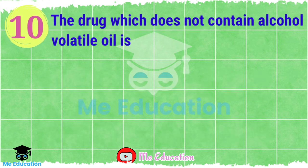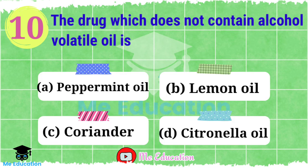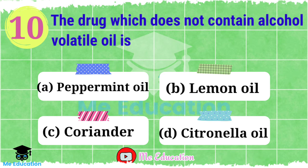Question number 10: The drug which does not contain an alcohol volatile oil is — Option A: peppermint oil; Option B: lemon oil; Option C: coriander; Option D: citronella oil. This is very easy — pause the video and answer this question. The right answer is Option B, lemon oil.